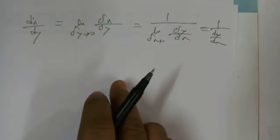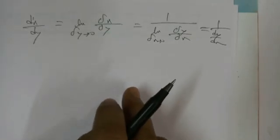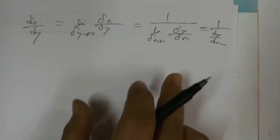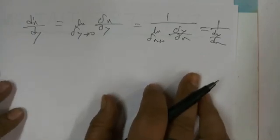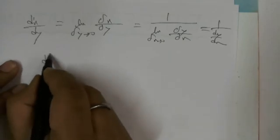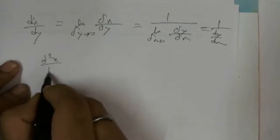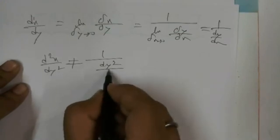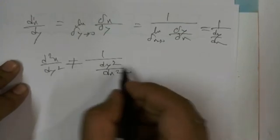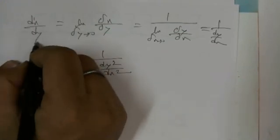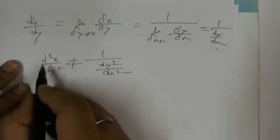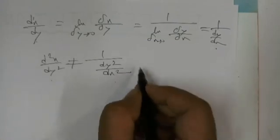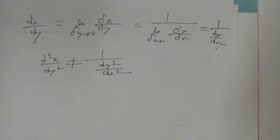Please keep watching this video to the end for full understanding. Important note: d²x/dy² is not equal to 1 upon (d²y/dx²). So dx/dy = 1/(dy/dx), but the double derivative is not equal to 1 upon d²y/dx². This is very important to remember.